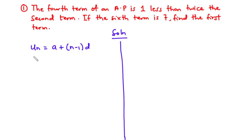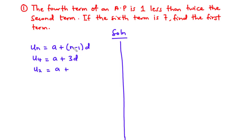For the fourth term, we have u_4 = a + (4 - 1)d = a + 3d. For the second term, that is a + (2 - 1)d = a + d. And then for the sixth term, that is a + 5d.